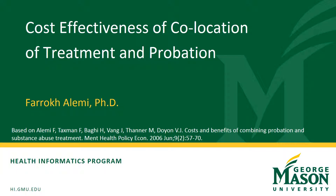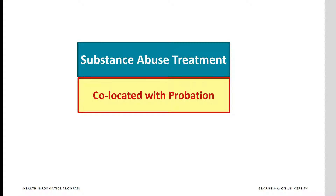These slides were prepared by Farrak Alemi and show how a decision tree can be used to help cost-effectiveness analysis. Over 4 million people are on probation. Could co-locating substance abuse treatment with probation enhance both treatment and reduce recidivism?